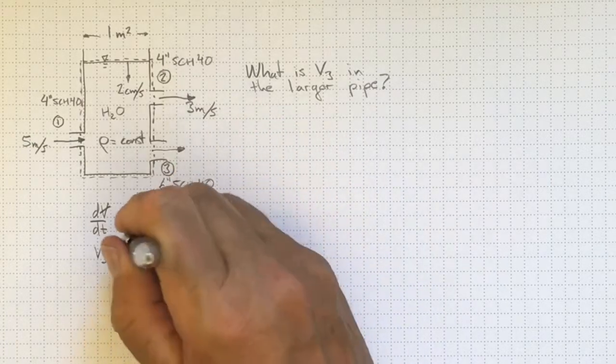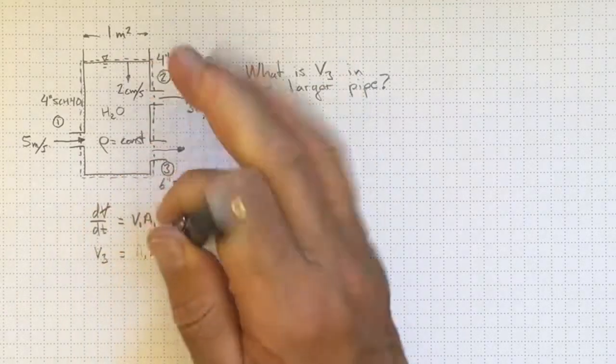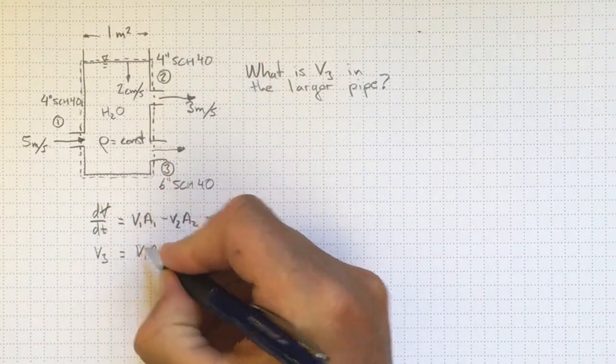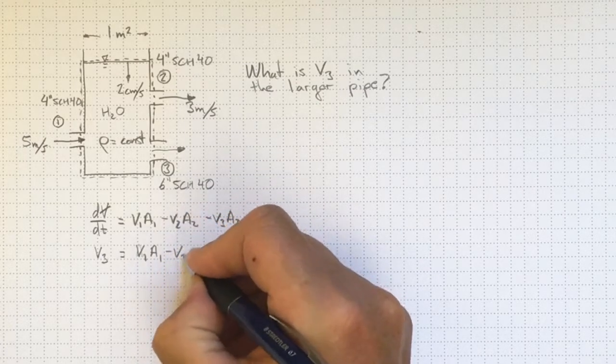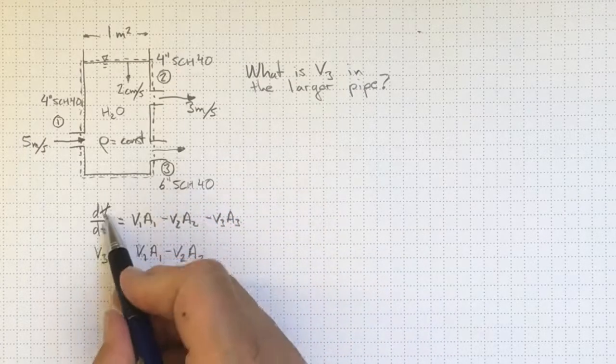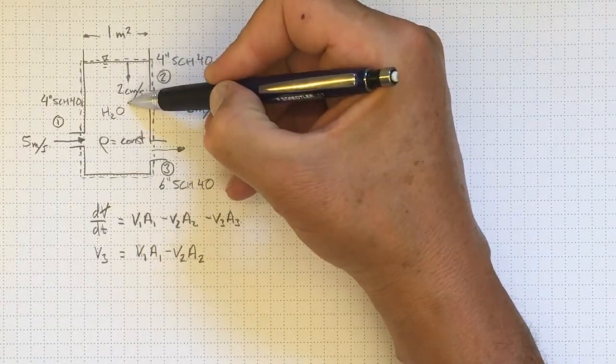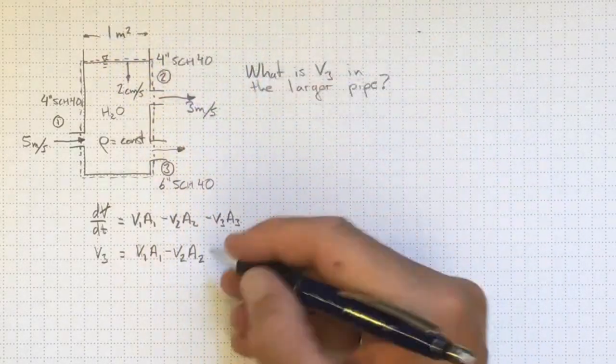Whoops, everybody makes mistakes. V1 A1 minus V2 A2, the dV/dt, that's the velocity at which this is going down times that area. So that'll be the velocity of the surface as it moves down times the area of the surface.